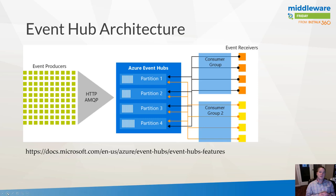By using consumer groups, we have the ability to do pub/sub type semantics. Azure Event Hubs are different from Azure Queues and Topics. With a traditional queue, once a message has been retrieved it's essentially gone. What's different about Event Hubs is that messages are stored for a specific duration — typically one to seven days. Consumer groups use a cursor to keep their own track of consumed messages, allowing them to consume independently of each other.